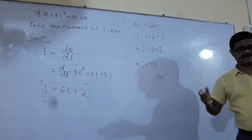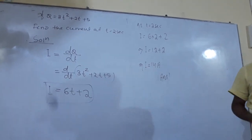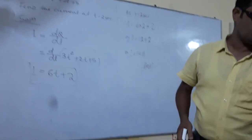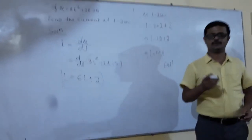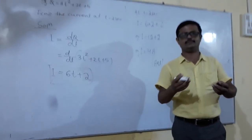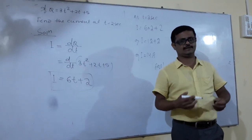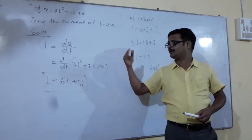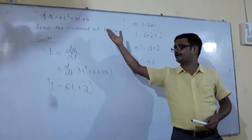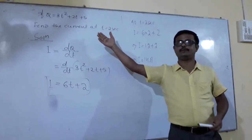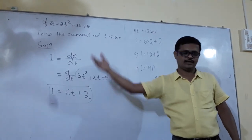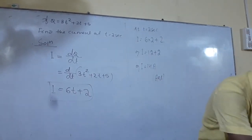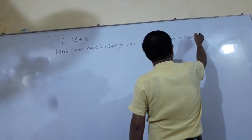This is a very simple question, the type of typical question you may find. You can easily solve it — q is given, simply find the derivative to get the current. Now let me solve another question.